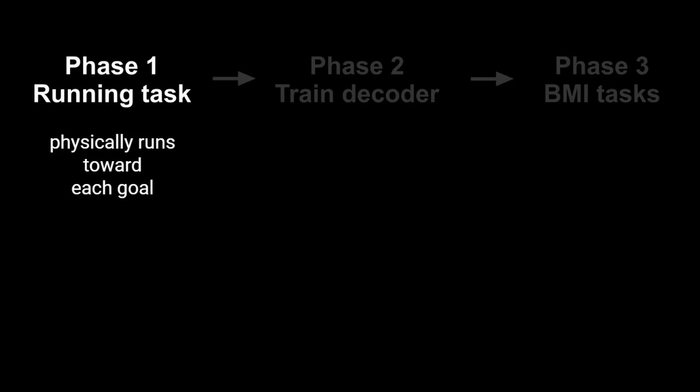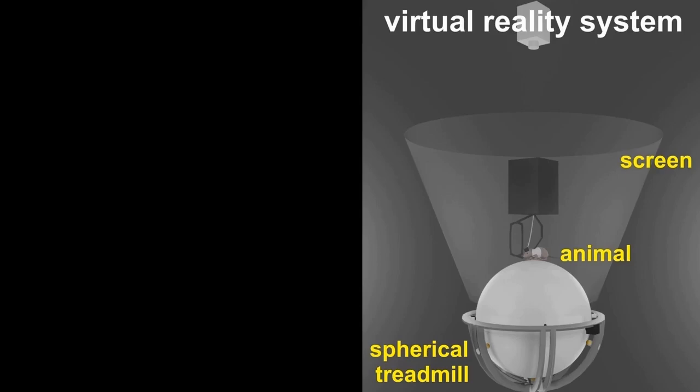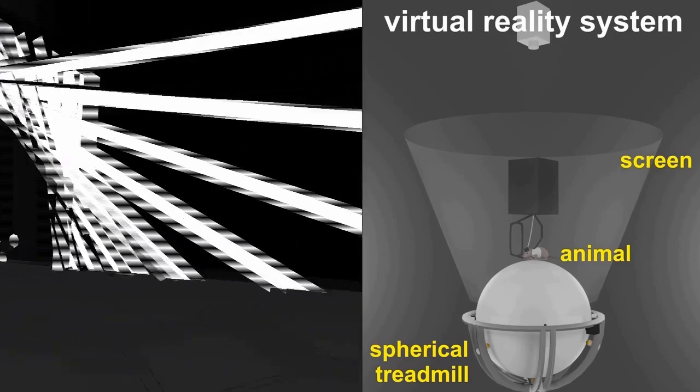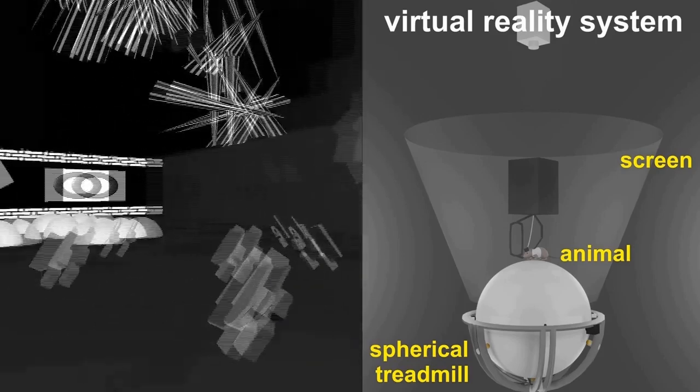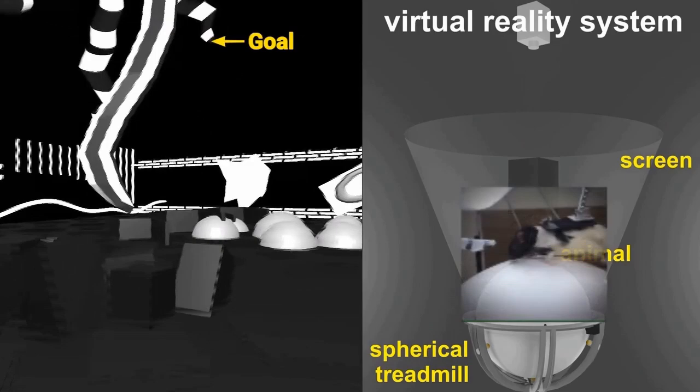The rat runs in a 360-degree immersive virtual reality environment. They can freely rotate their bodies to orient themselves in a one meter by one meter virtual arena. As it runs, the rotation of the spherical treadmill is converted into a visual update on the screen.